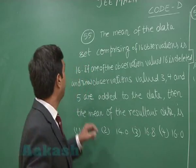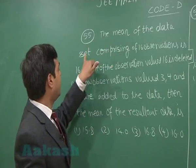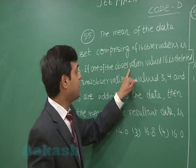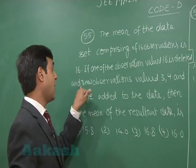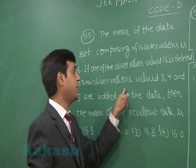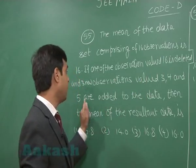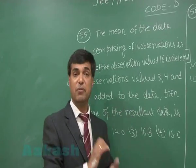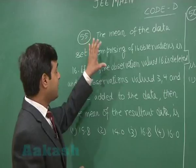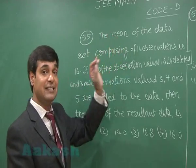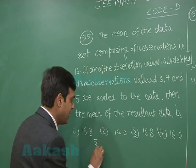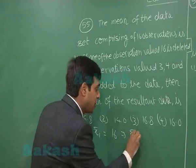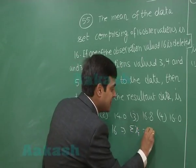Question 55: The mean of a data set comprising 16 observations is 16. One observation valued 16 is deleted and 3 new observations valued 3, 4, and 5 are added. It is given that the old mean is 16, so the summation of the data is 16 × 16 = 256.